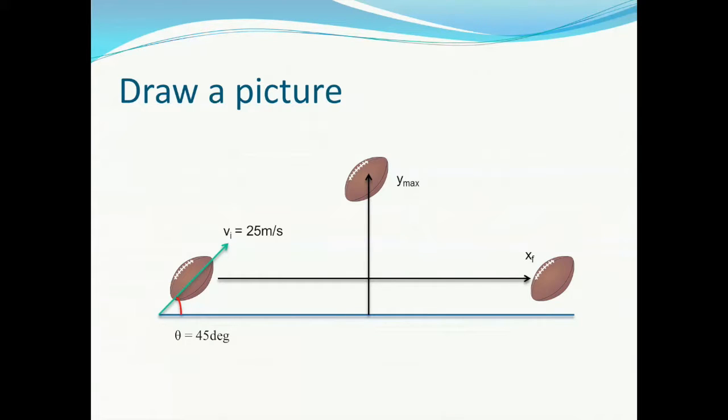As we said before, we start by drawing a picture. Shown below is a perfectly adequate example of a picture that could be used to solve this problem. Again, it doesn't have to be well drawn, it just needs to include all the necessary information. In this case, the initial velocity, the launch angle, and the other two points along the path which we're trying to figure out.